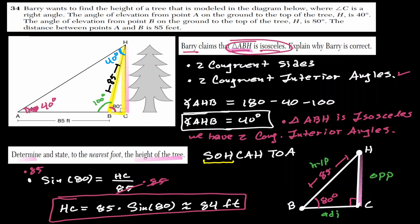Using the sine function: sine of 80 degrees equals HC over 85, so HC equals 85 times sine of 80 degrees, which is approximately 84 feet. The height of the tree is 84 feet.